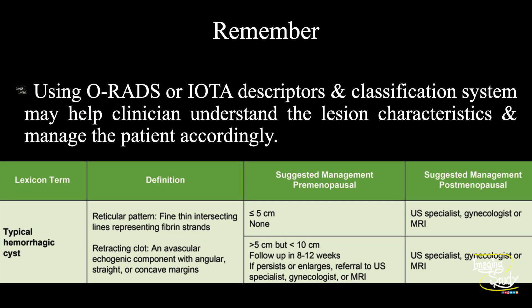Now the take-home message: using ORAGE or IOTA descriptors and classification system helps the clinician understand the lesion characteristics and manage the patient accordingly. As it is a less than 5 cm typical hemorrhagic cyst, the guideline shows no need of further management.